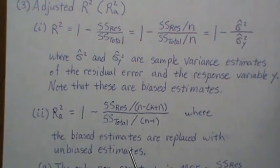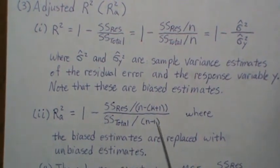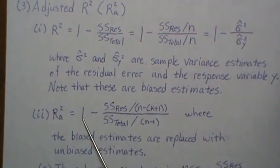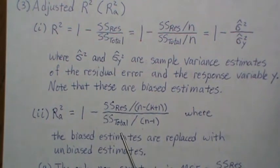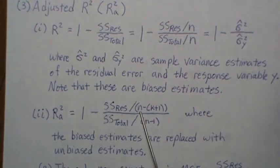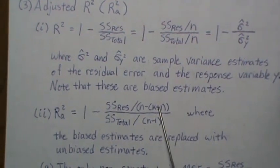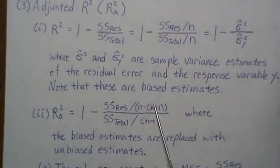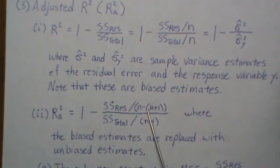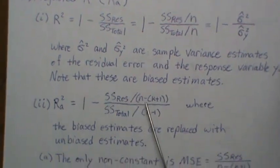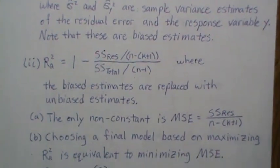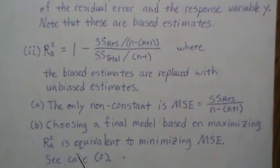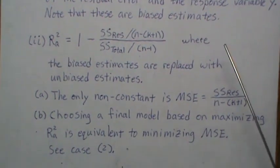When examining the adjusted R squared formula, the constant 1, sample size n, and sum of squares total are all constants across models. The only non-constant is k — the number of regression variables — and sum of squares residual. So the only non-constant term is sum of squares residual divided by n minus k plus 1, which is the mean square error. Therefore, choosing a final model based on the adjusted R squared is actually equivalent to minimizing the mean square error.